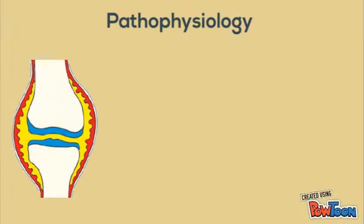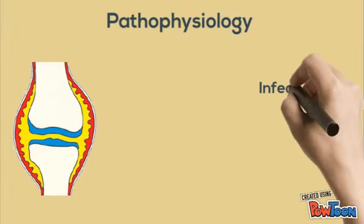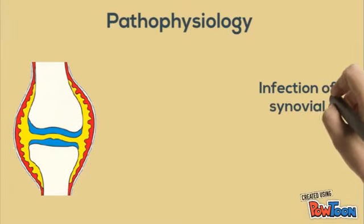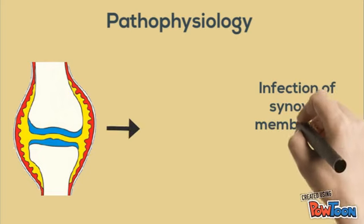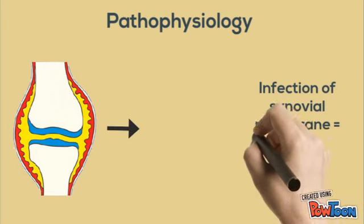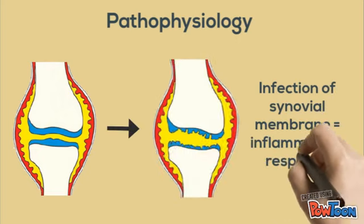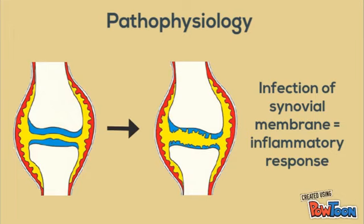Infection of the synovial membrane, usually from hematogenous spread, causes an inflammatory reaction producing a purulent exudate and an increased production of synovial fluid.